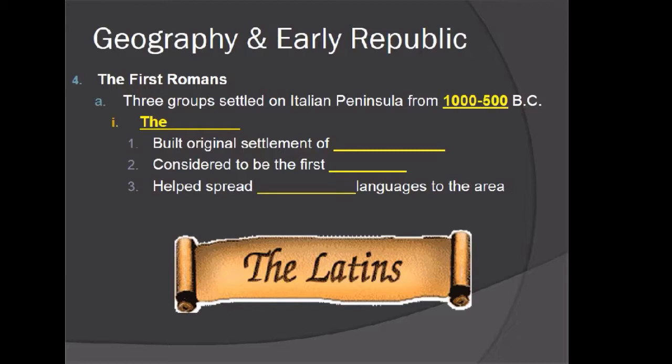The first Romans settled on the Italian peninsula around 1000 to 500 BC. The first group were the Latins, who built their settlements of wooden huts — not high technology, but it worked. They are considered the first Romans and helped spread Latin-derived languages to the area. Even today, many words in the English language come from Latin words originating from this culture.